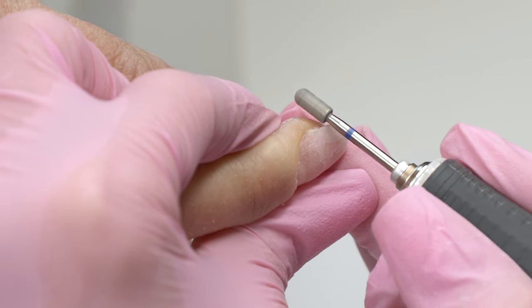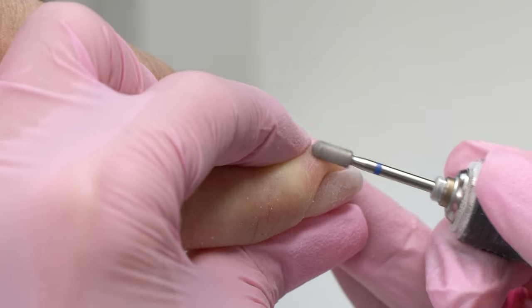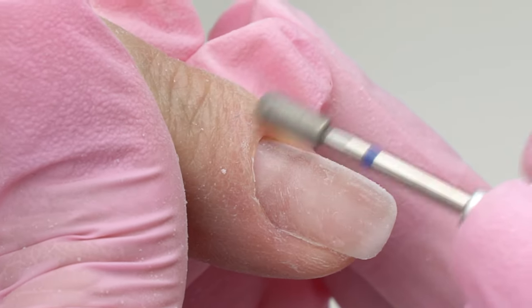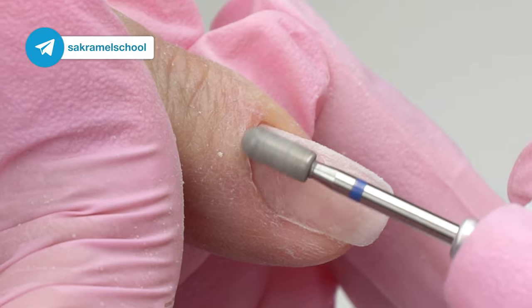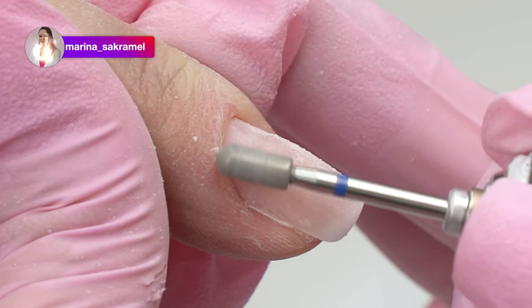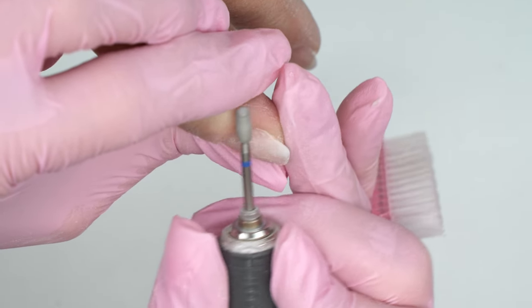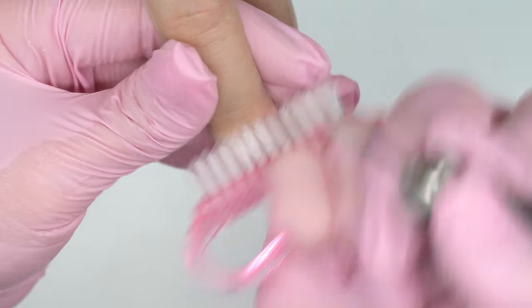So I'm going to cut the cuticle with another blue drill bit, but I'm being careful so as not to over-file it. Up close, this skin looks like parchment paper. It's dry and thin at the same time. So I should maintain a balance. It's about watching the client's reaction to cause them no discomfort.